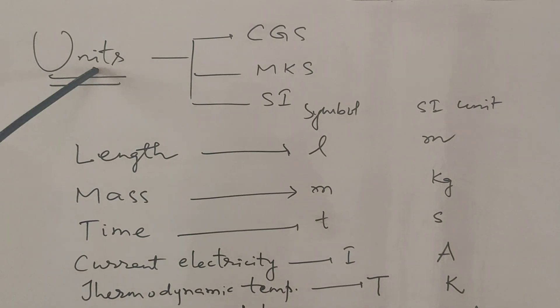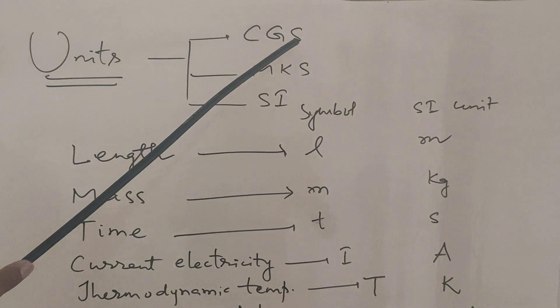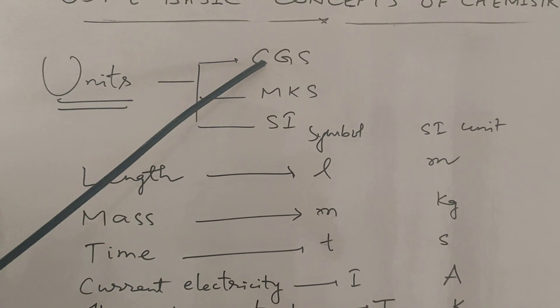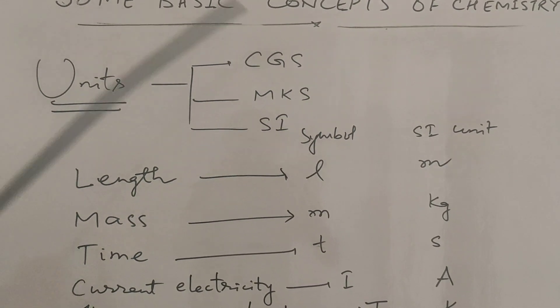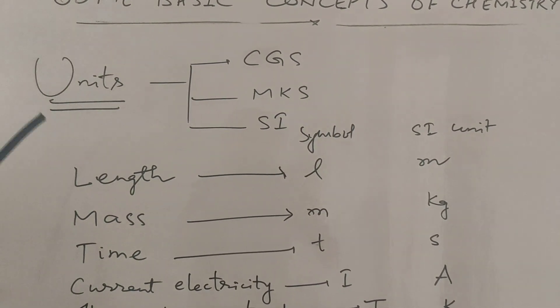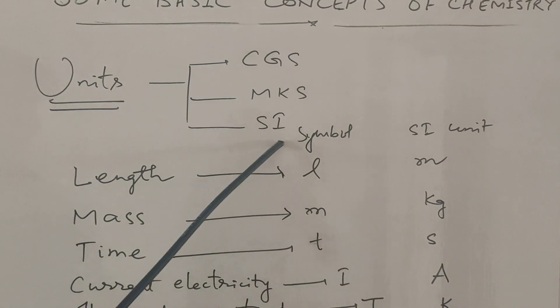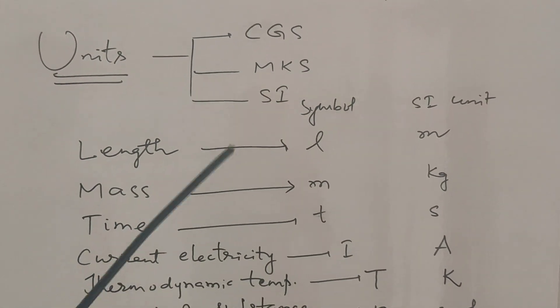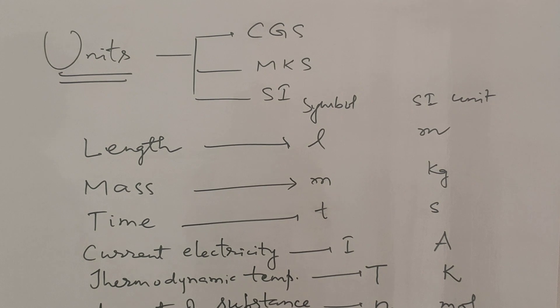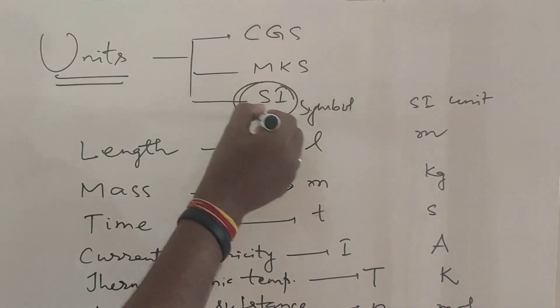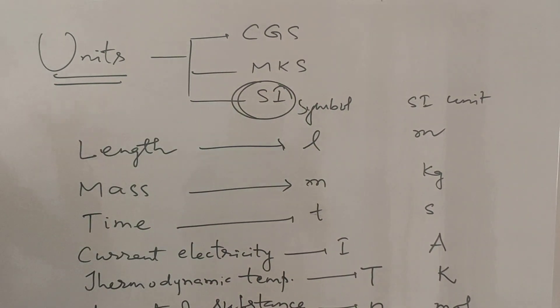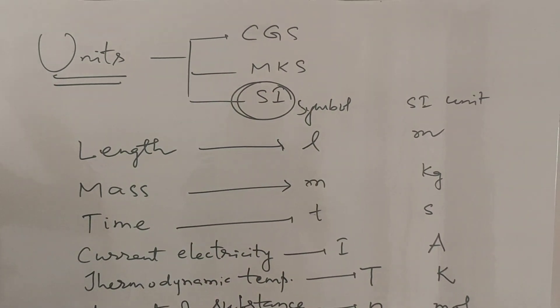Now moving to units — there are three types: CGS units, MKS units, and SI units. We currently use SI units, whose full form is Système International d'Unités.